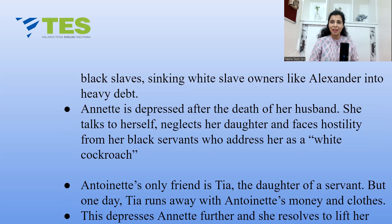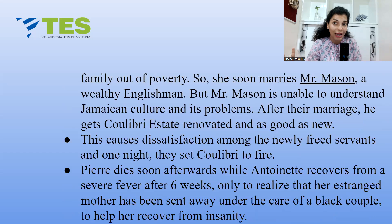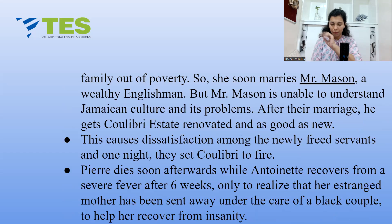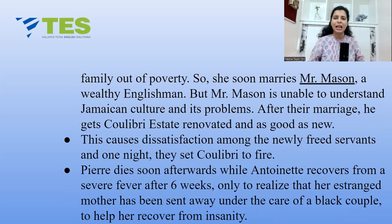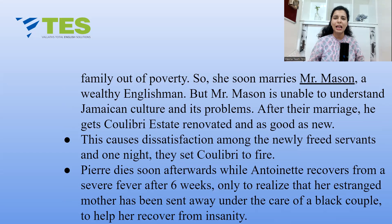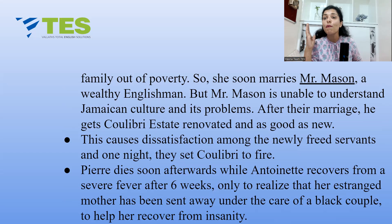Looking at the family's poverty, mother Annette resolves to lift them out by marrying a rich man. She soon marries Mr. Mason, a wealthy Englishman. However, Mr. Mason cannot understand Jamaican culture and its problems related to race and ethnicity. After their marriage, he gets the Coulibri Estate renovated, causing great dissatisfaction among the newly freed servants, and one night an angry mob sets Coulibri on fire.